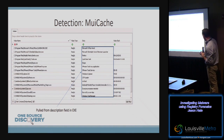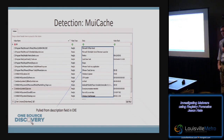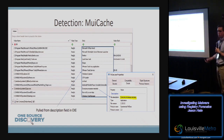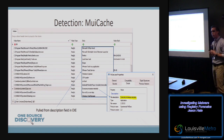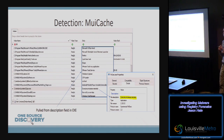For example, looking at the third from the bottom process, you see a description called 'execute processes remotely.' That's PSExec from Sysinternals. What happened here is the actual PSExec executable was renamed to pe.exe. But when it was run, the description from PSExec — because it was a valid executable — was pulled in and saved in the registry. Looking at the properties of PSExec, sure enough, the description is 'execute processes remotely.'